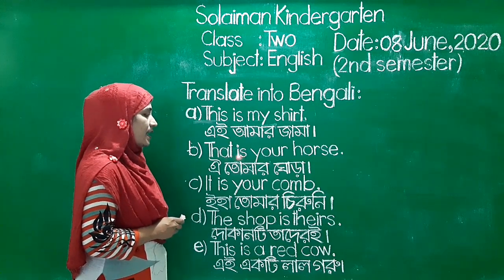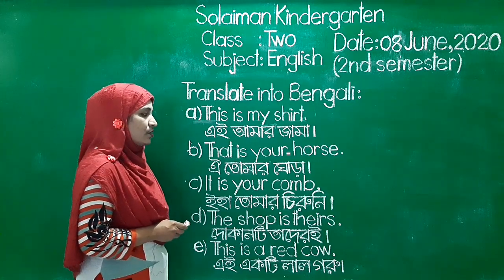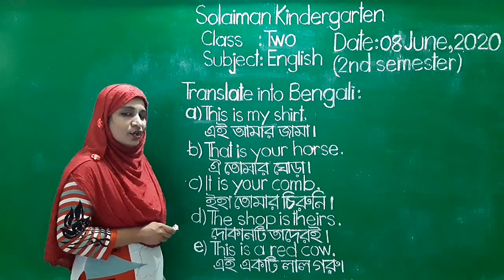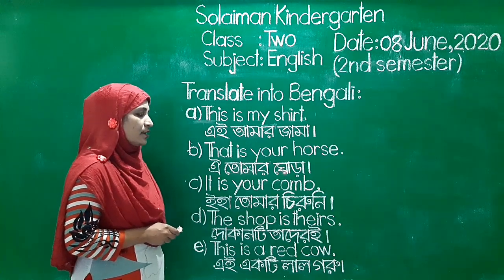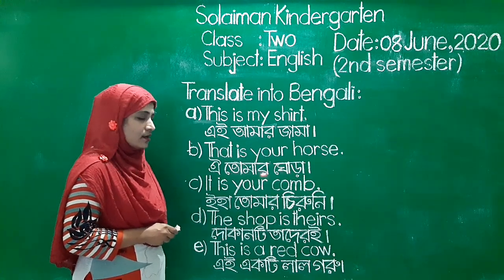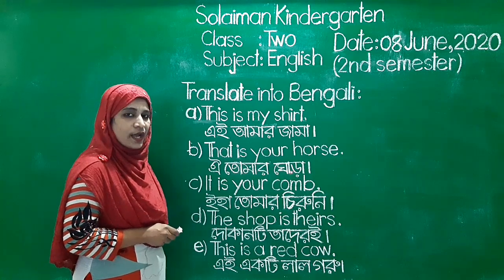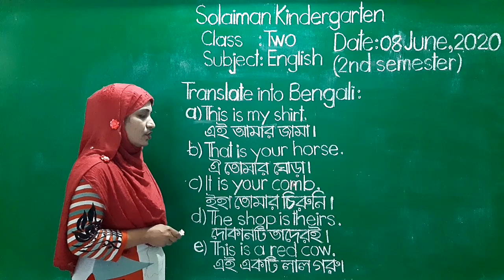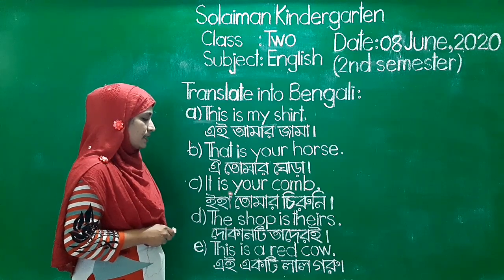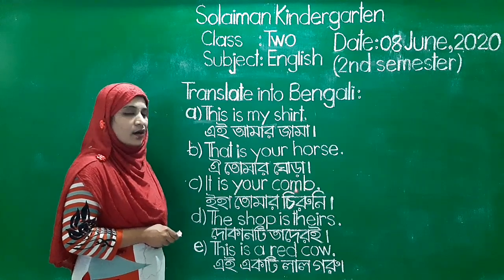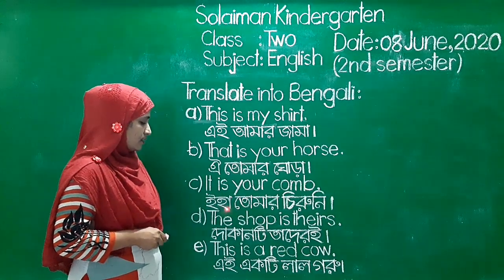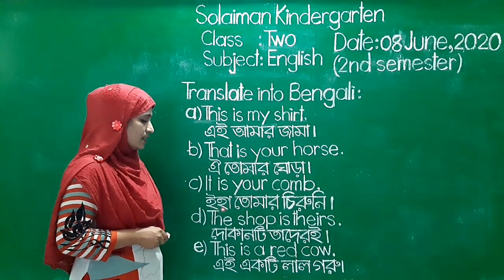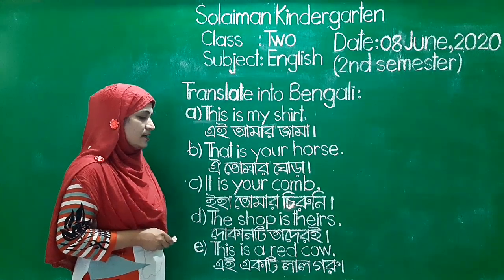B number: That is your horse. Arthro, o-i-tomar ghora. C number: It is your come. Arthro, eha tomar ghora.